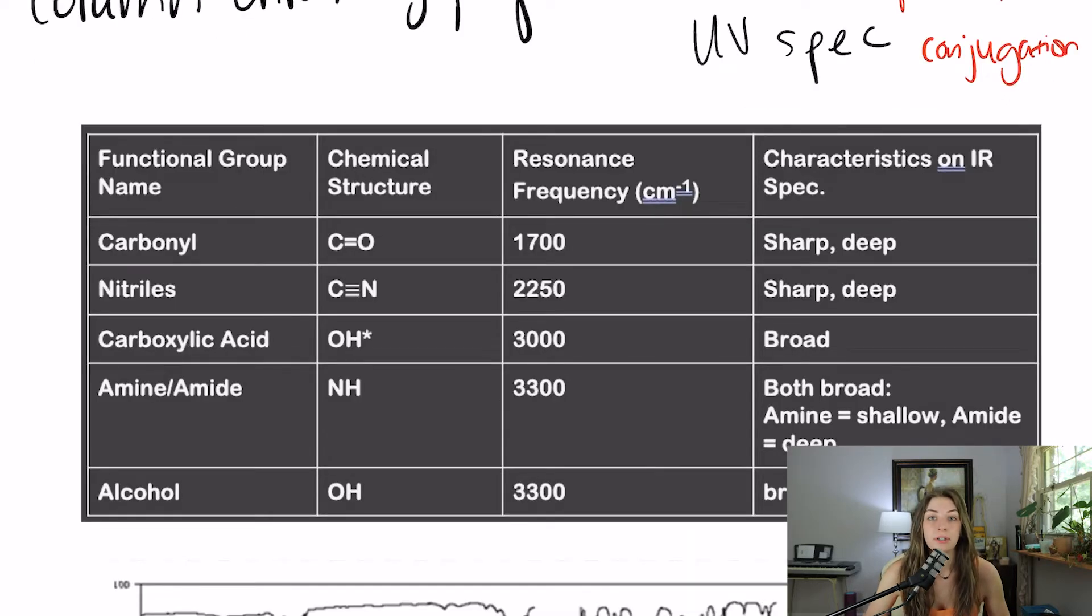Now, maybe in your orgo class, you were given an IR spec and you had to guess what the molecule is. That's not necessarily how it's going to be tested on the MCAT. The most common way I see it tested is that you are told a specific resonance frequency. Maybe you're shown an actual IR, you're usually not. And you're asked to pick the molecule that it is, but it's going to be pretty simple usually and straightforward because there's only going to be one that has that specific functional group.